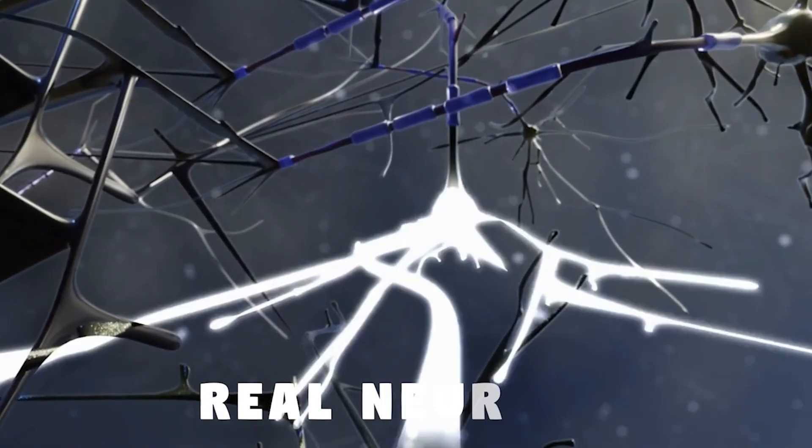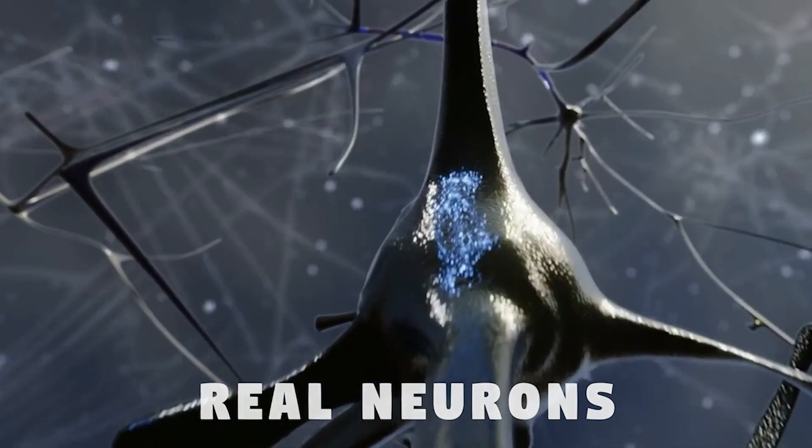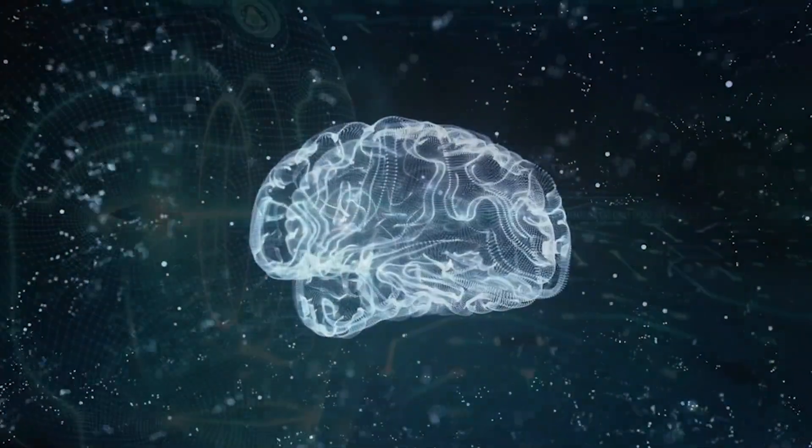Real neurons, on the other hand, have the ability to recall past activity, which influences their future behavior. This built-in memory is a crucial element of how the brain processes information, and replicating it is a key objective of neuromorphic engineering.